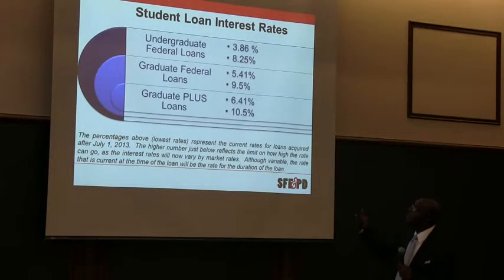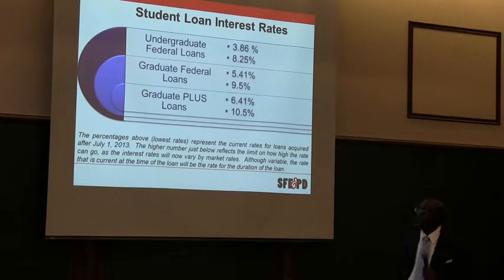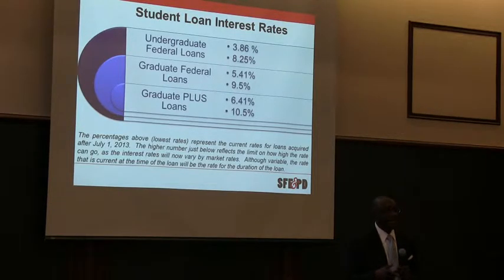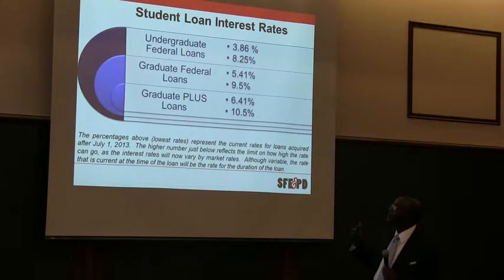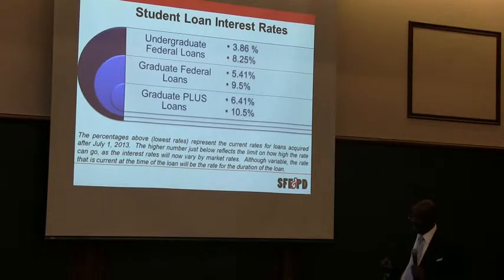The interest rate on undergraduate subsidized student loans is 3.86%, and 8.25% for unsubsidized loans. Graduate students pay 5.41%. What's key is that it used to be that all loans under your master promissory note would carry the same interest rate. Now the new law says every year you get a loan, you get a different interest rate based on market conditions. Right now the cap is 8.25% for undergraduate and 9.5% for graduate federal student loans. Next year it could be 8.5% or 10%, going back and forth based on market conditions.